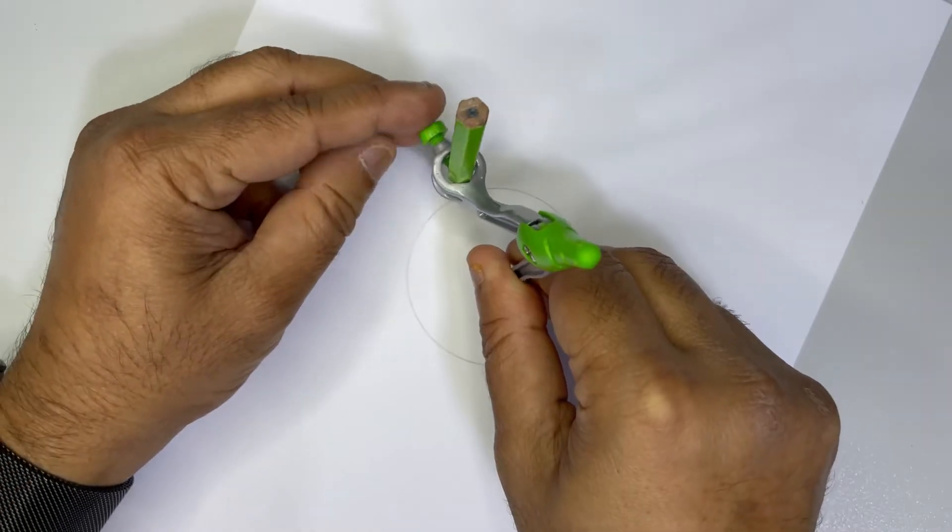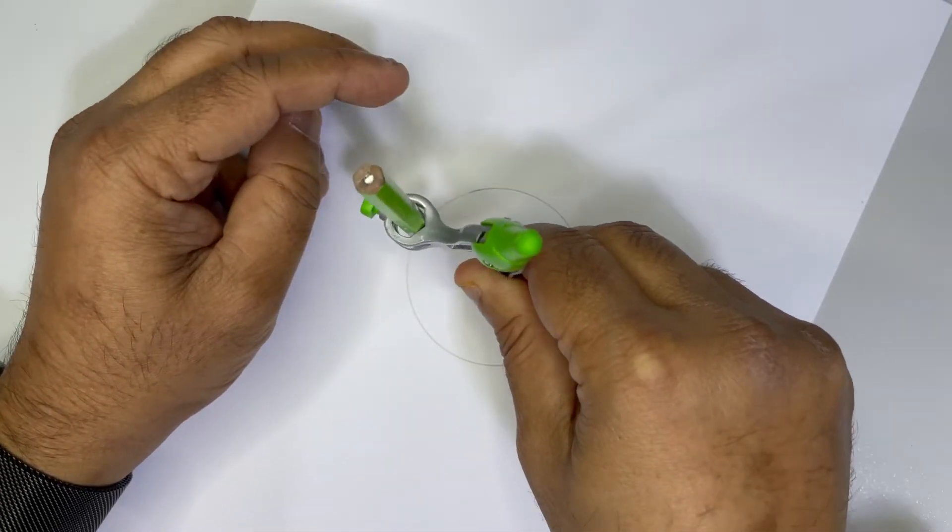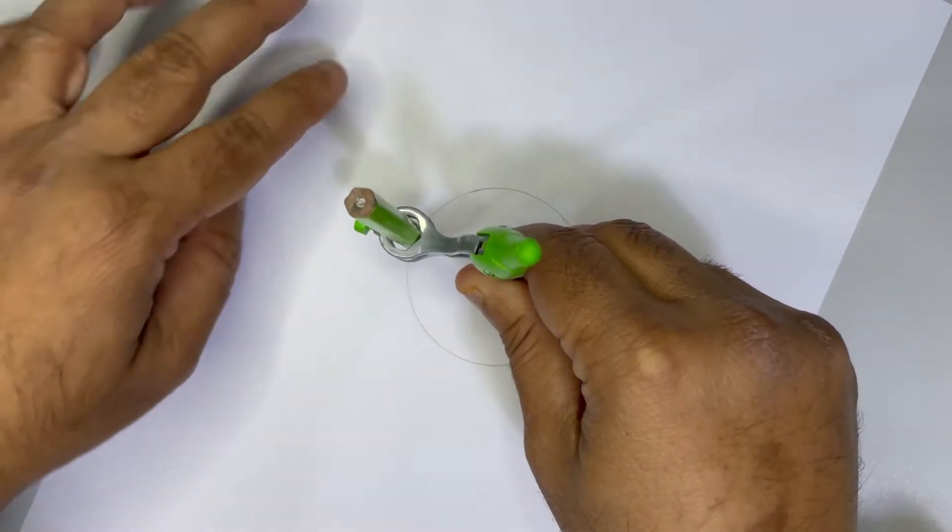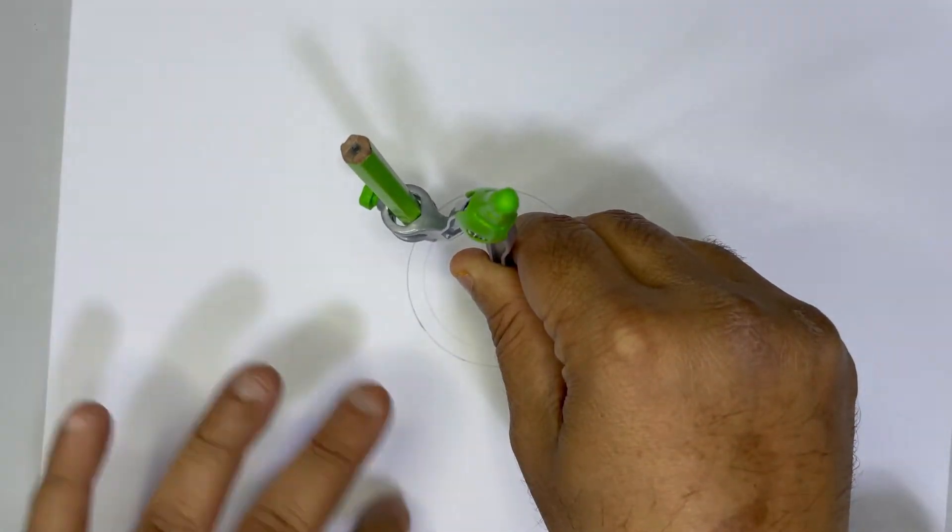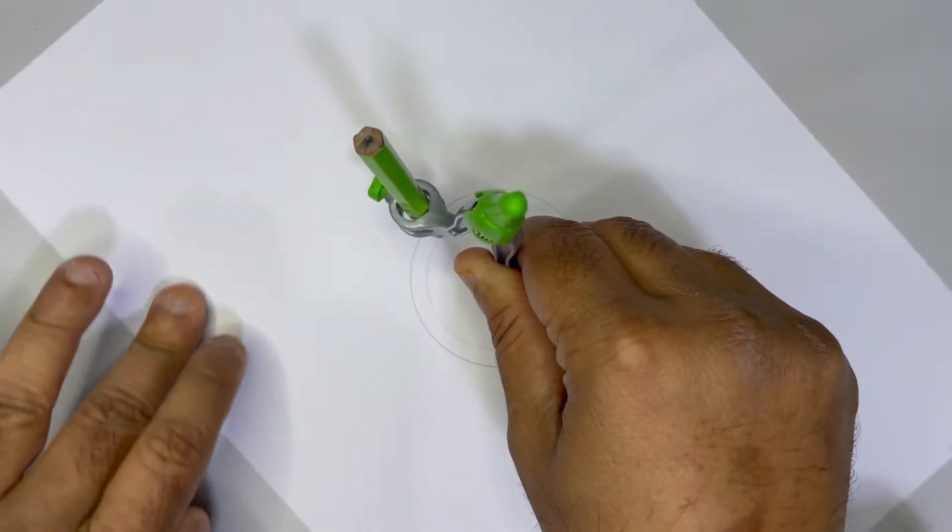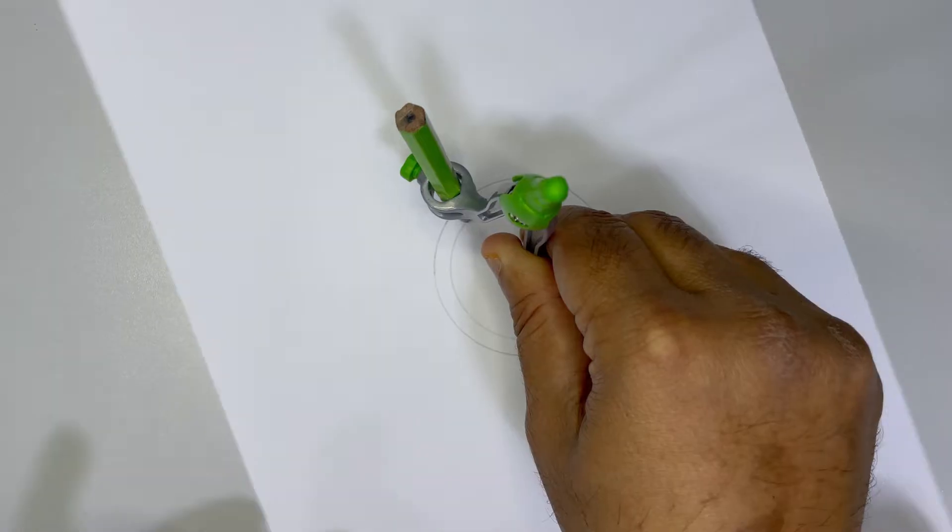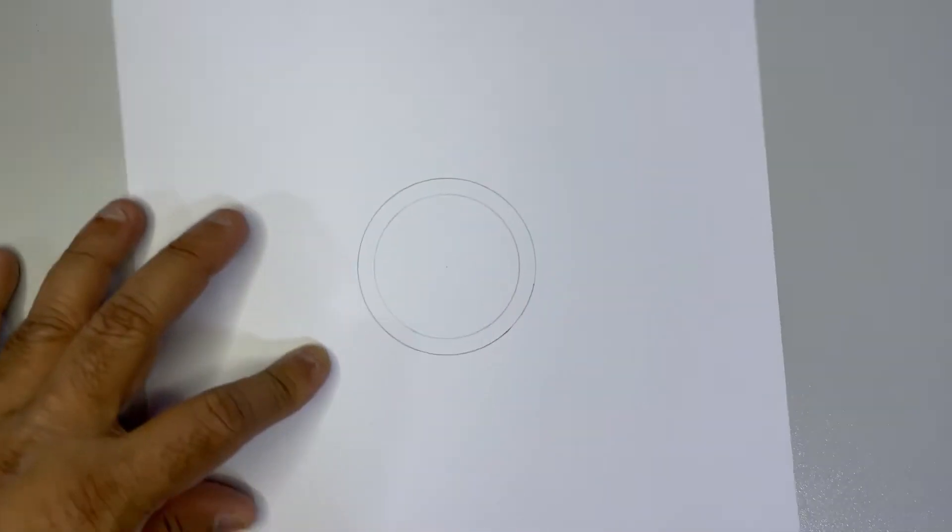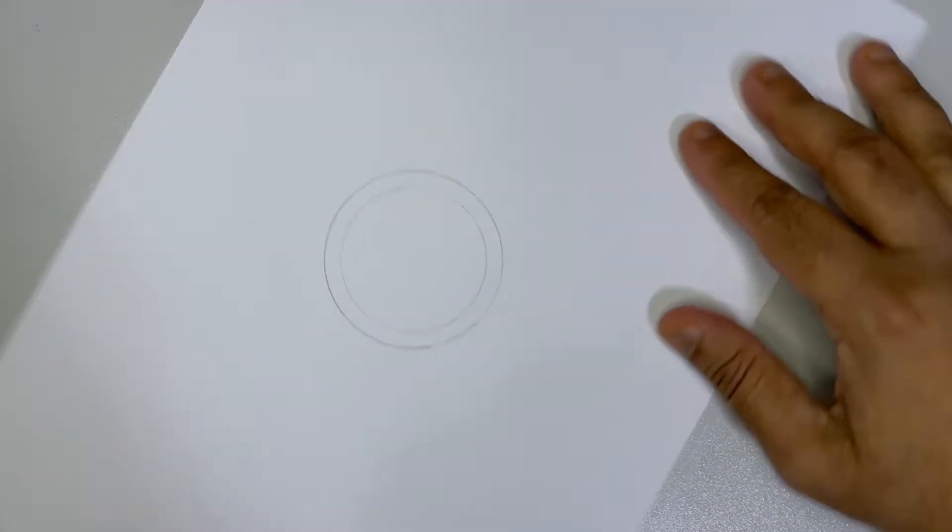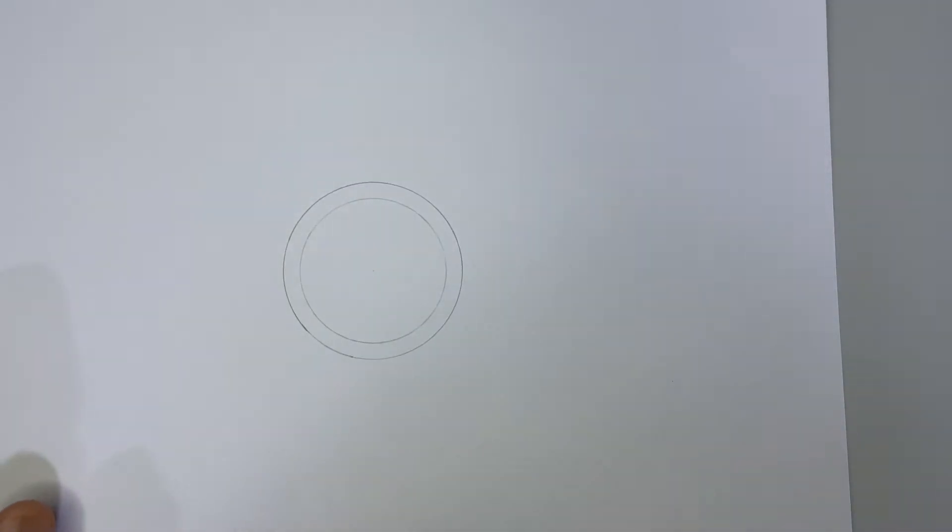Then just reduce a little, reduce the radius of the compass and draw another circle, a concentric circle. All right, done. So this is what we do first of all. After that things are very simple.